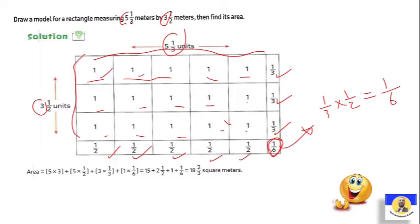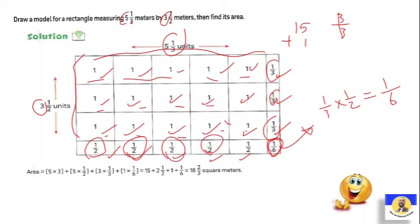We said 1, 2, 3, 4, 5, 6, 7, 8, 9, 10, 11, 12, 13, 14, 15. So we have 15. How many thirds? Five thirds. Plus one, 16. Plus two, it's 18. So we got the 18.